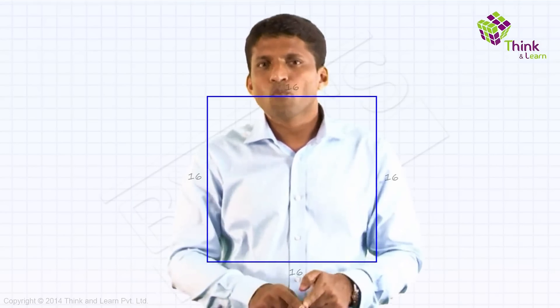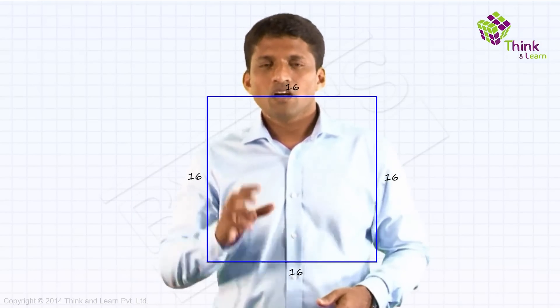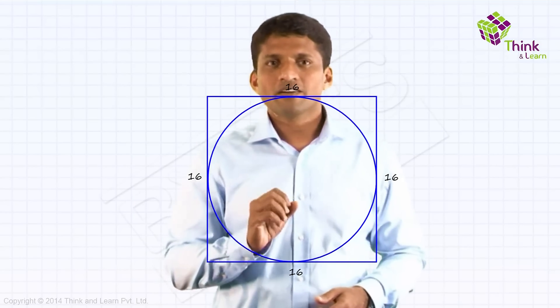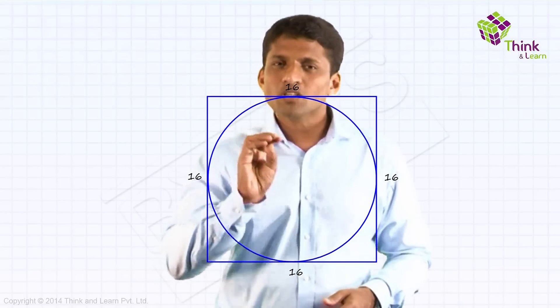So let me give you the question. Take a square with side 16. Now put the maximum circle inside, and inside that circle put the maximum square.